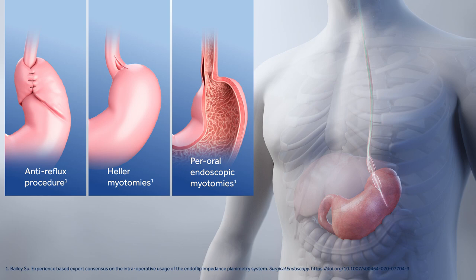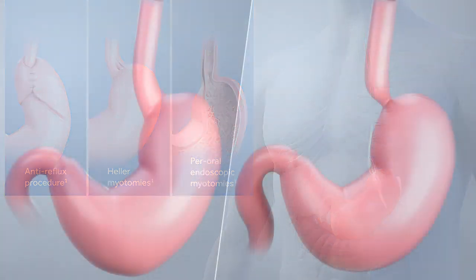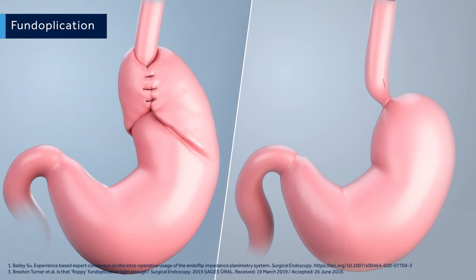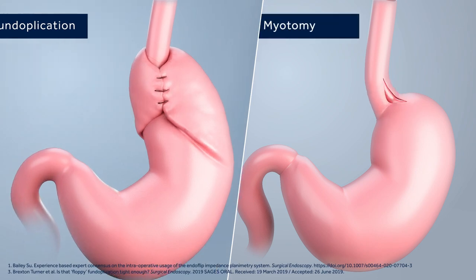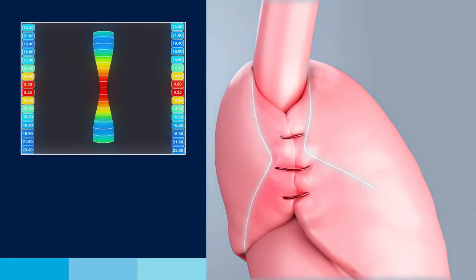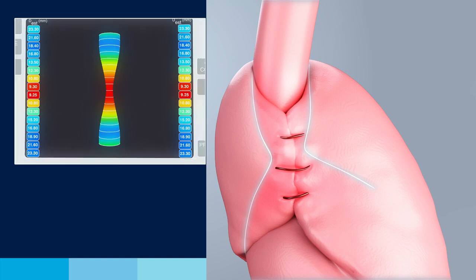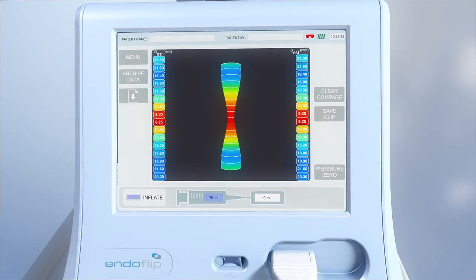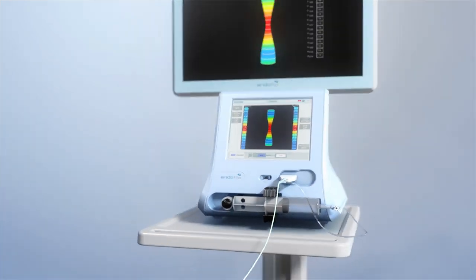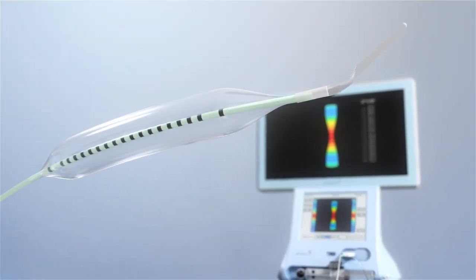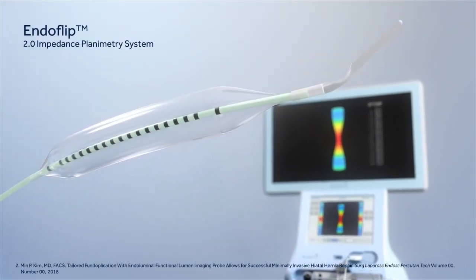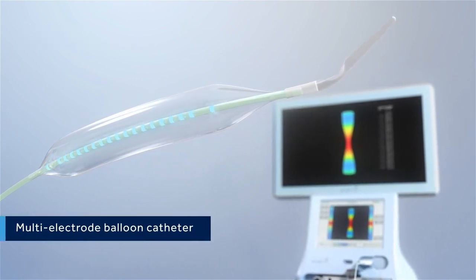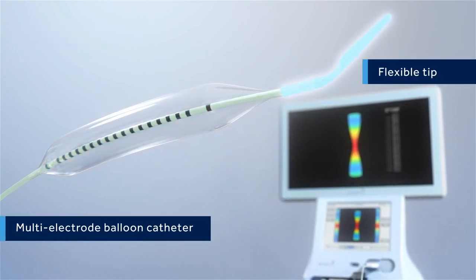During an operation, the tightness of a fundoplication or adequacy of a myotomy needs to be carefully assessed. The EndoFLIP impedance planimetry system provides an objective way to determine the tightness of the repair and displays the data visually. EndoFLIP 2.0 includes a multi-electrode balloon catheter with a flexible tip that acts as a functional lumen imaging probe.